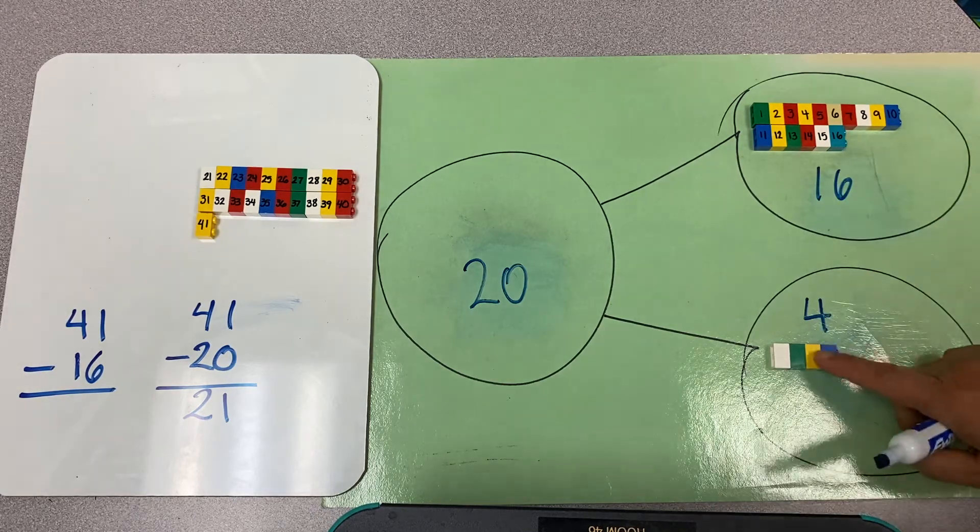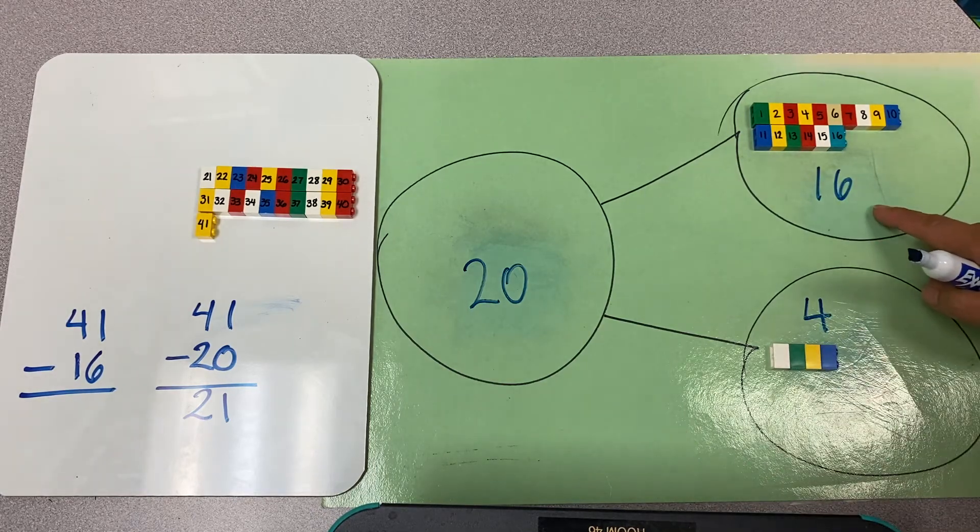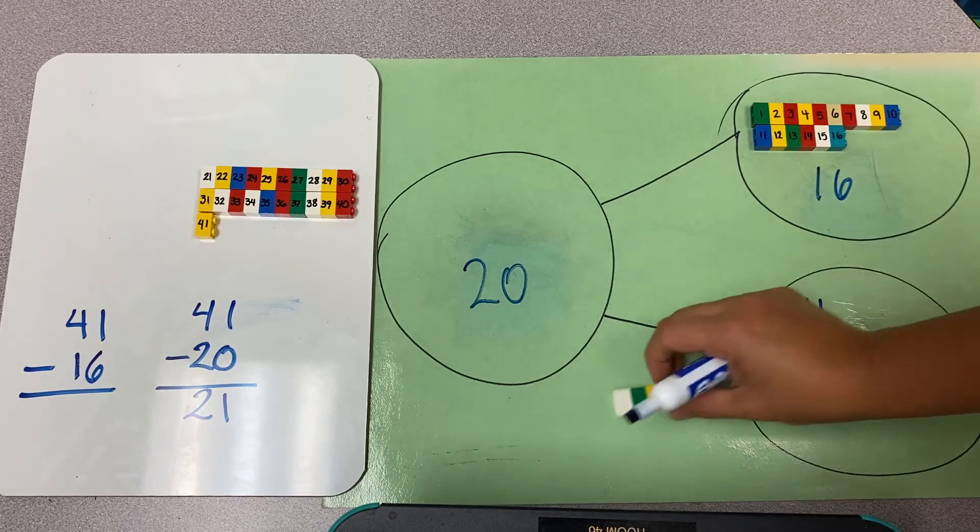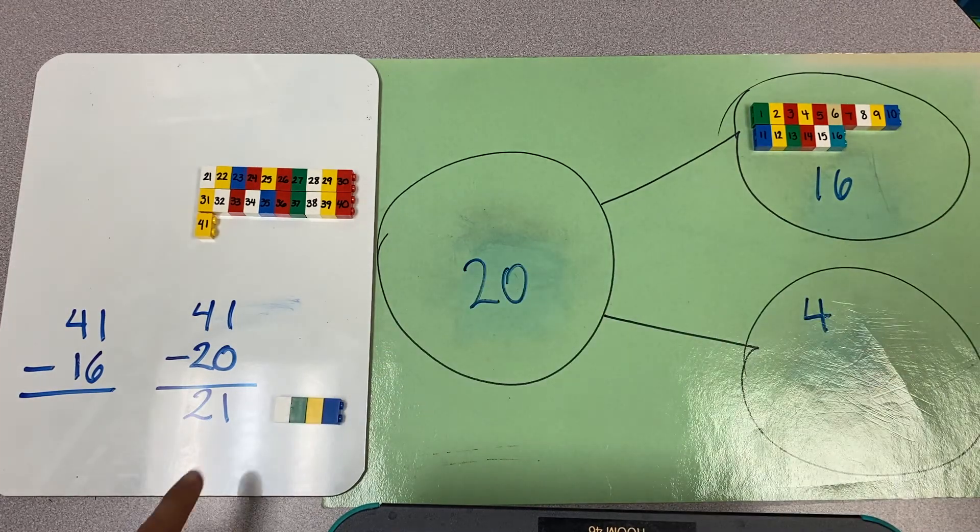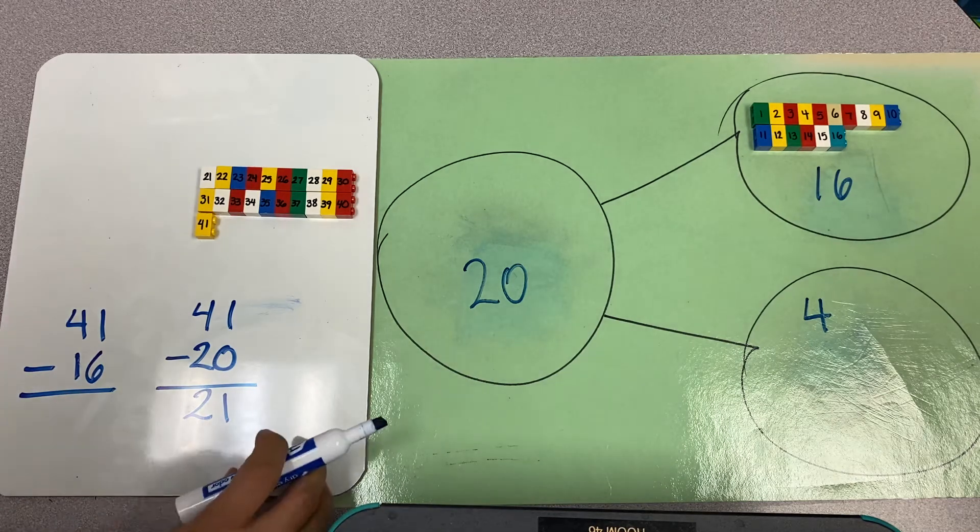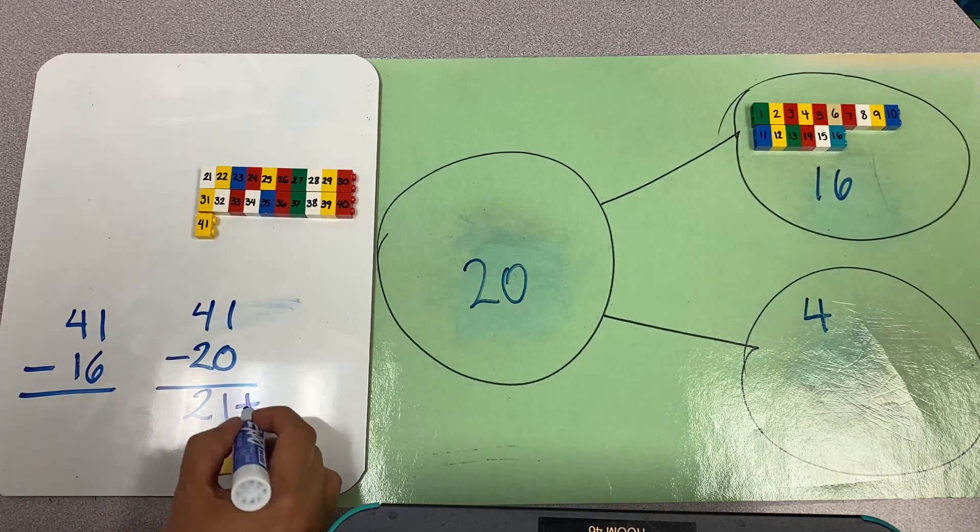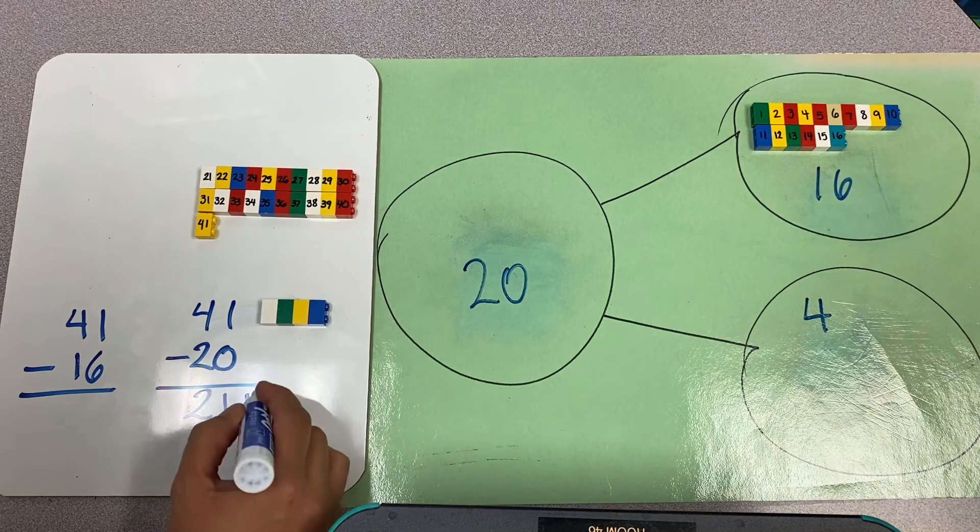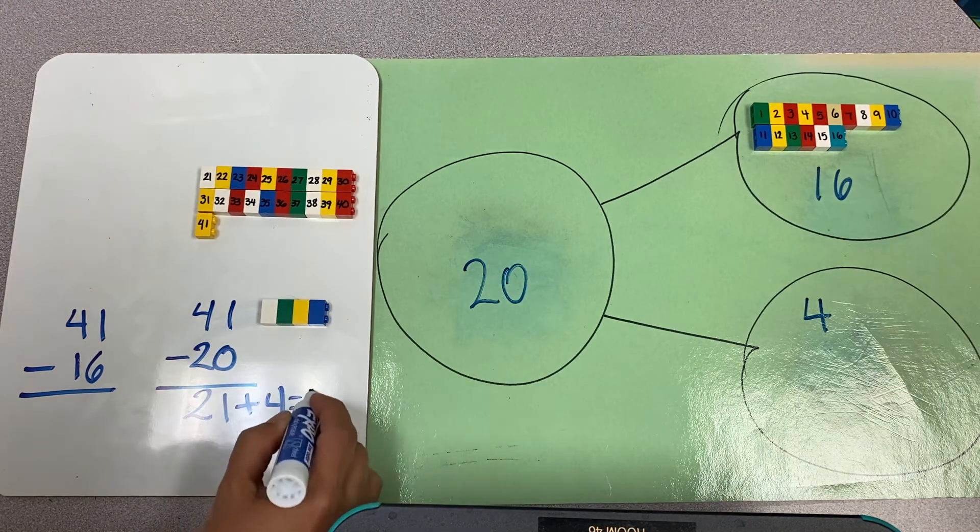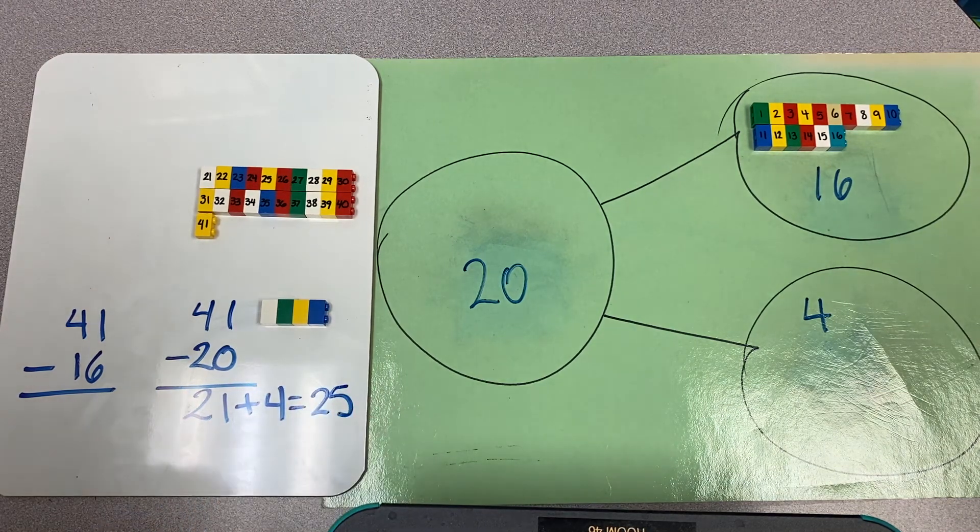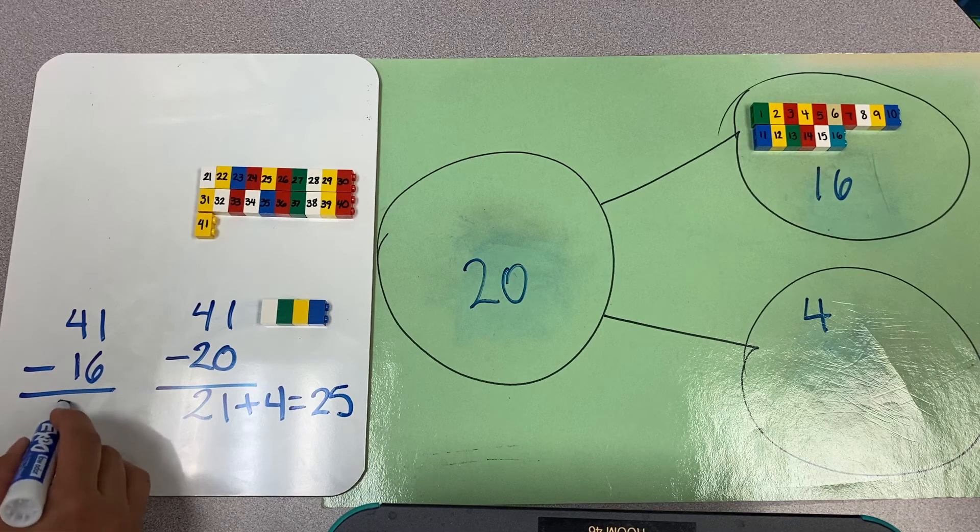I didn't want this, I only wanted 16, so I bring this back to the answer I already had, the partial answer. So 21 plus the four I'm taking back equals 25. So 41 minus 16 equals 25.